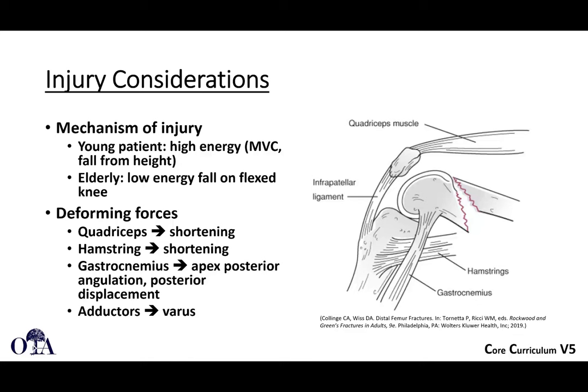For injury considerations, understand the mechanism — younger patients have higher energy trauma, lower energy falls happen in the elderly. The deforming forces are important: the quadriceps and hamstrings cause shortening, and the gastrocnemius, which originates on the posterior aspect of the distal femur, causes angulation and displacement. This distal fragment rotates and shortens, and you need to consider that deforming force when reducing these fractures.